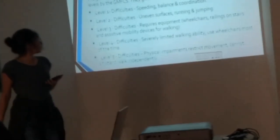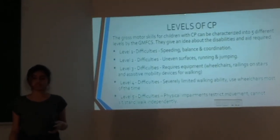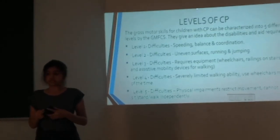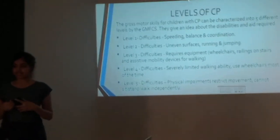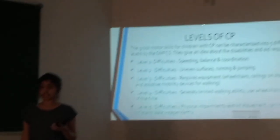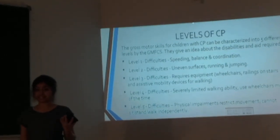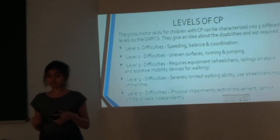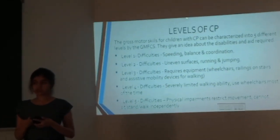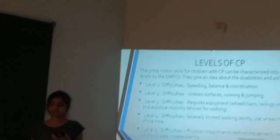The gross motor skills for children with Cerebral Palsy can be classified into five different levels, each of which gives us an idea of the disability, the patient's needs, and the aid and help they require. Level 1 difficulties include speeding and problems with balance and coordination. Level 2 difficulties include running and jumping on uneven surfaces. Children with level 3 disability require equipment such as wheelchairs, walkers, and assistive walking devices. Children with level 4 difficulty have severely limited walking ability and will require a wheelchair most of the time. Children with level 5, the highest level, have extreme physical impairments due to which they cannot sit, stand, or walk on their own.